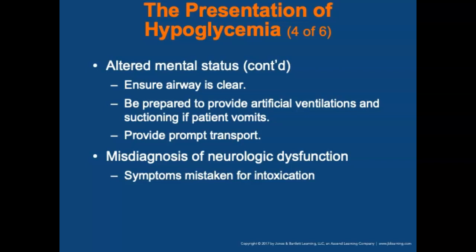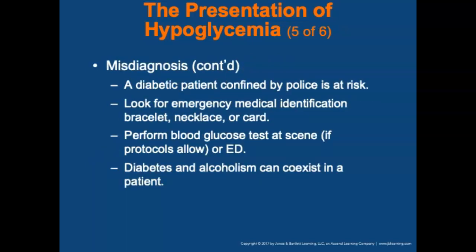Ensure the airway is clear, provide artificial ventilations if needed, and be prepared to suction if the patient vomits. Patients with a diabetic emergency are often mistakenly thought to be intoxicated and may be misdiagnosed as having a neurological dysfunction. An emergency medical identification bracelet, necklace, or card may help identify the situation. A blood sugar test performed at the scene or in the emergency room will help identify the problem. Be alert to the potential for diabetes and alcoholism to coexist in the same patient.